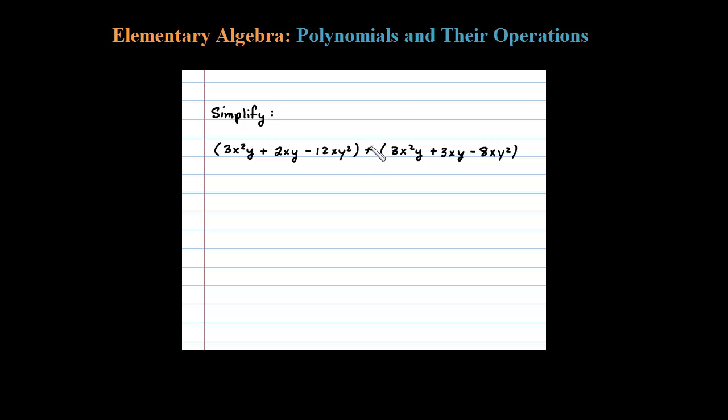Here we're asked to simplify this sum. To do this, all you have to do is look for like terms. To be like terms, the variable parts have to be exactly the same. So notice here we got 3x²y plus 3x²y.